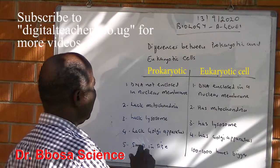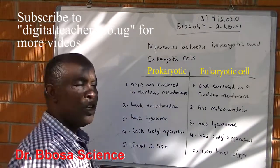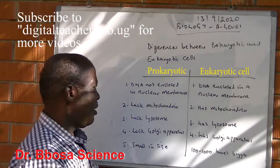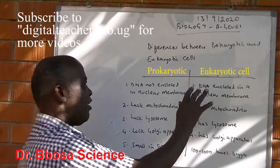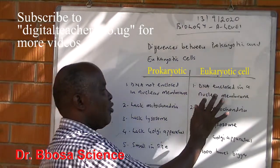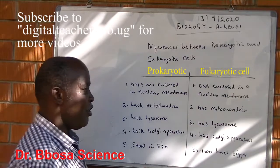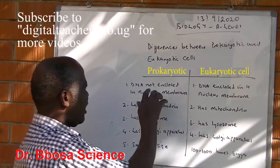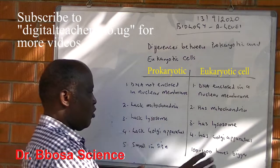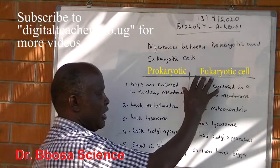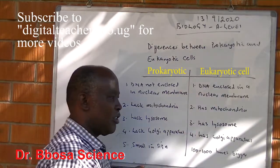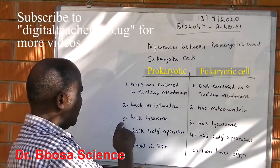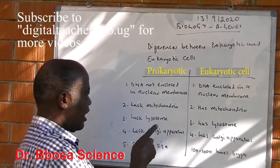The differences between prokaryotic cells and eukaryotic cells. 1: Prokaryotic cells have got DNA not enclosed in a nuclear membrane. 2: Eukaryotic cells have got DNA enclosed in a nuclear membrane. 3: Prokaryotic cells lack mitochondria. 4: Eukaryotic cells have got mitochondria.